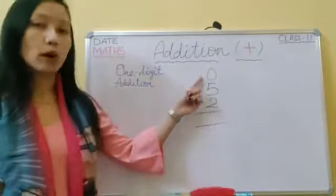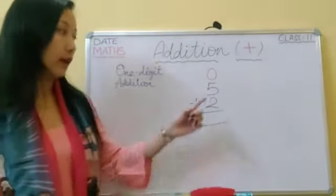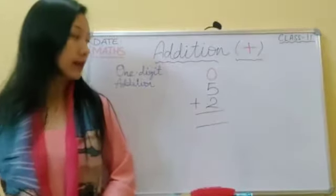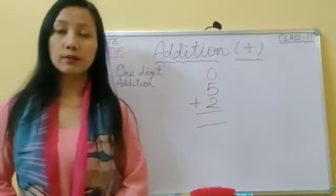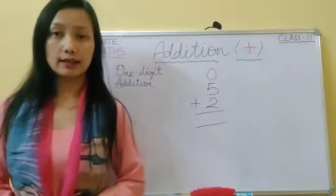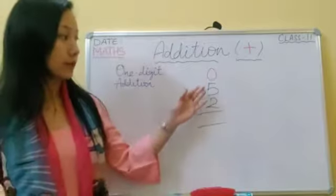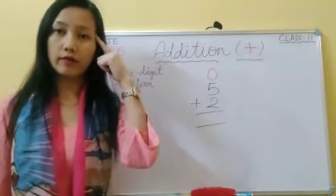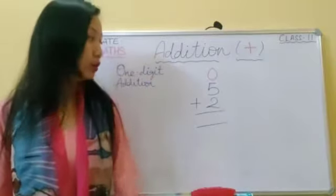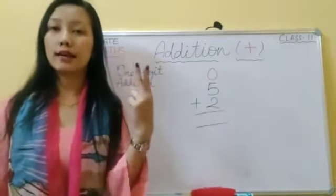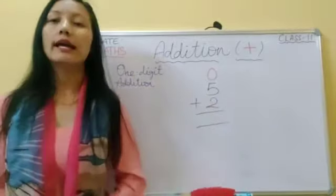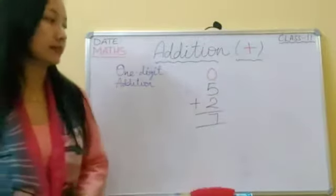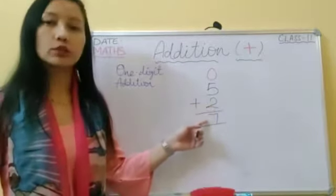Here we have only one column. You have to add five plus two. What will be the answer? You will keep the greater number five in your head and count on two: five, six, seven. Five plus two is equal to seven. Seven is your answer, or you can say the sum. The sum of five plus two is equal to seven.